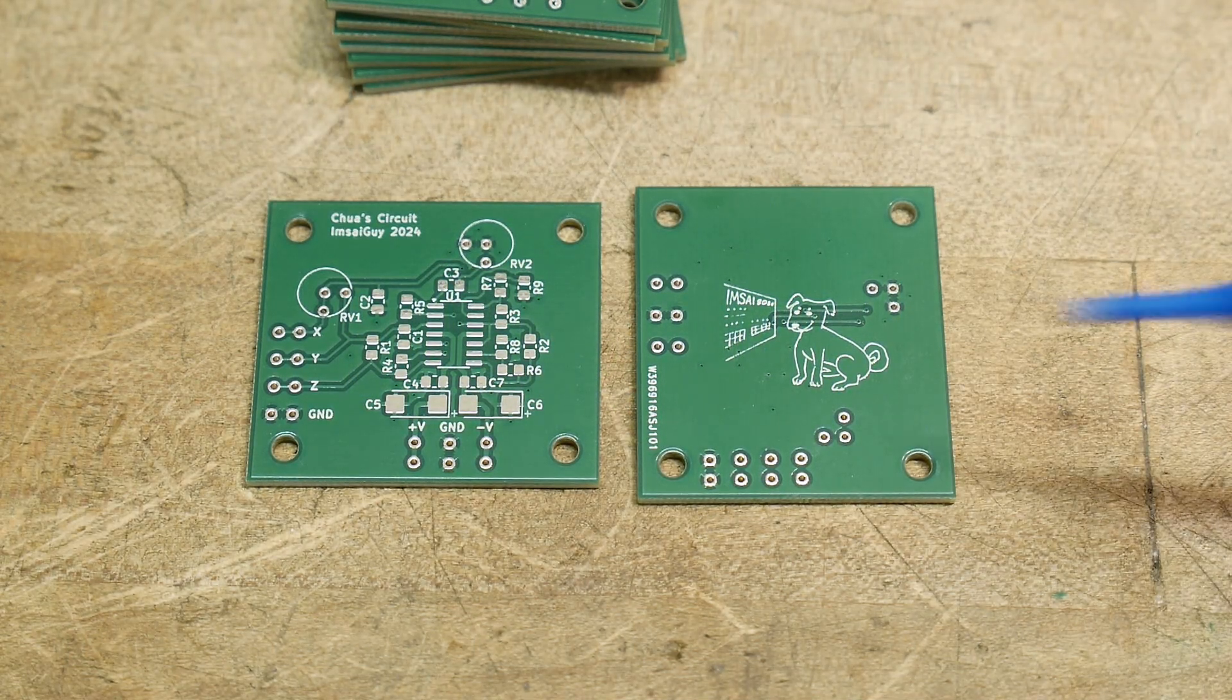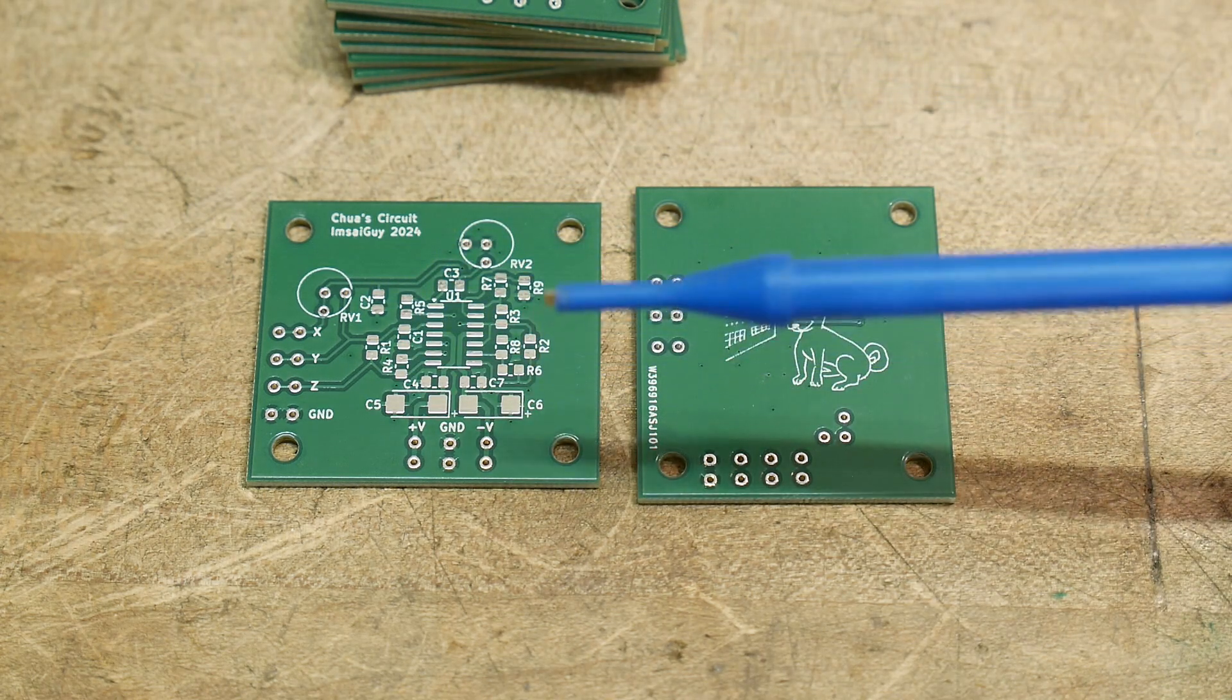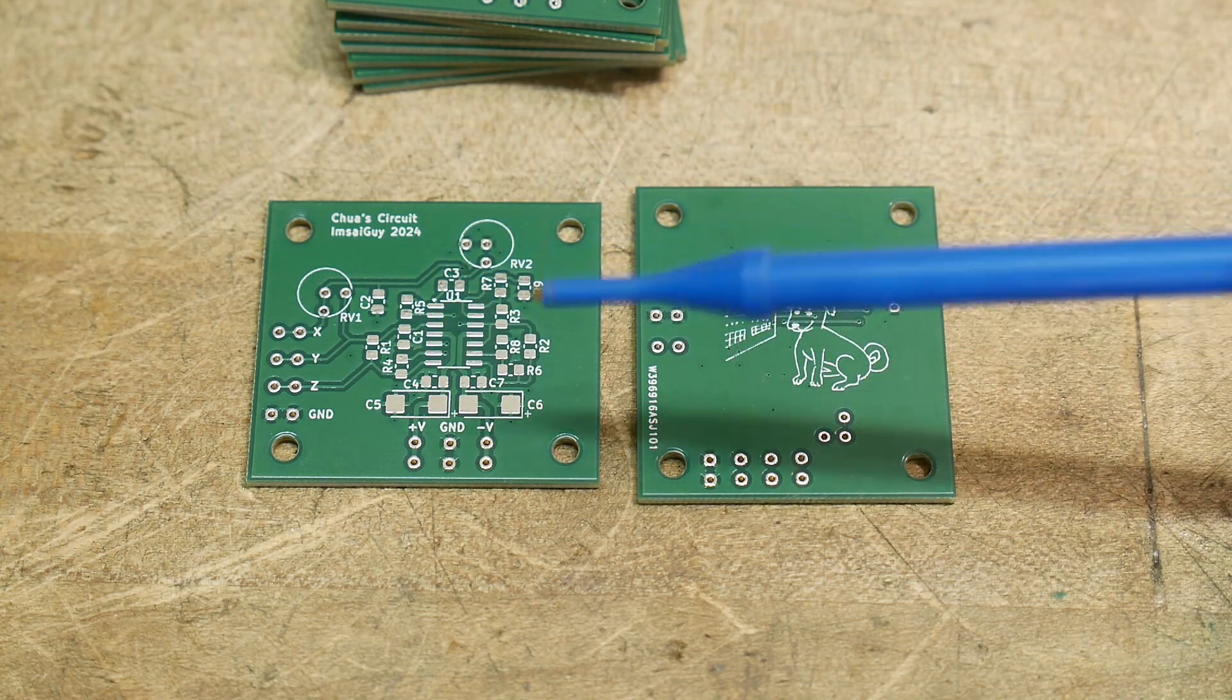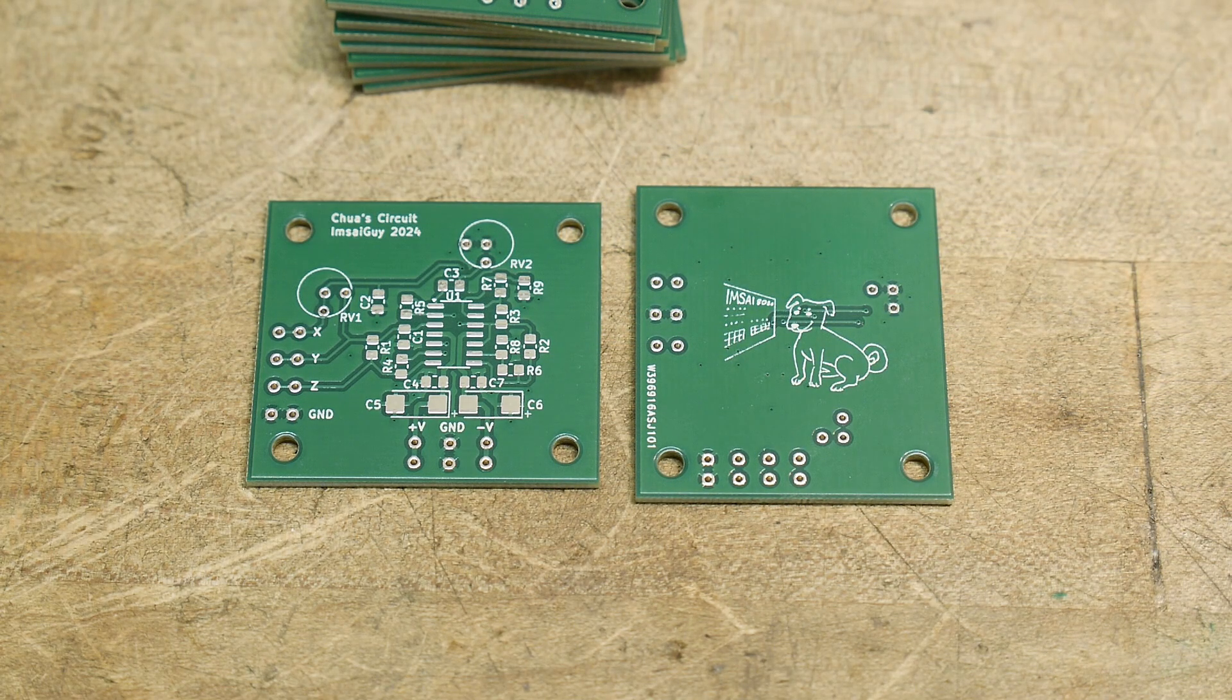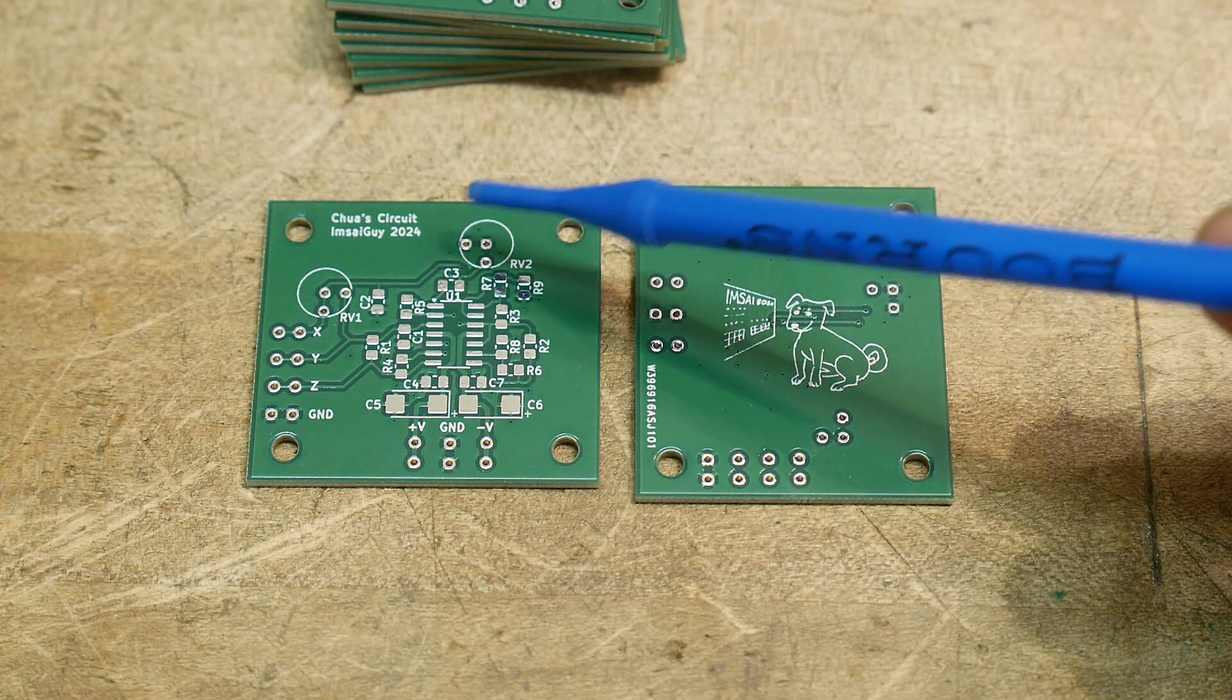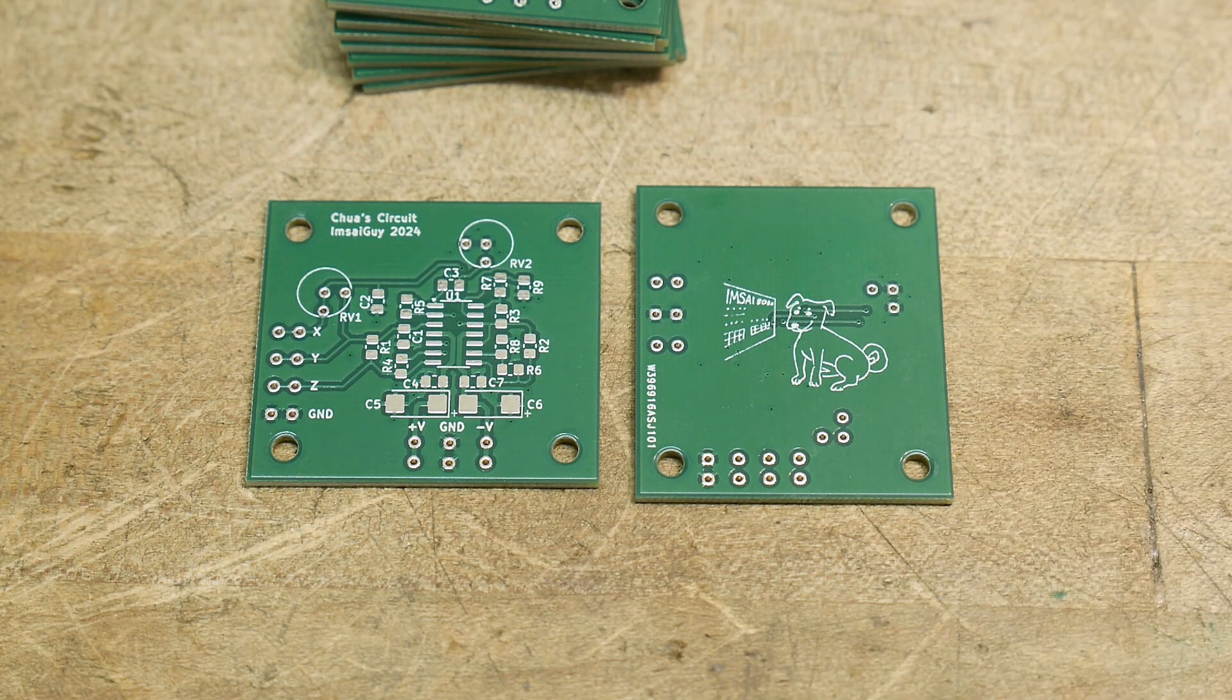All right, that was a fun little project and this one will be inexpensive because you don't have to have any multipliers which are expensive parts. The quad op amp is going to be quite cheap so you should be able to build this one for good money. So there you go. That was the Chua circuit and yeah I've had a lot of fun on that one.